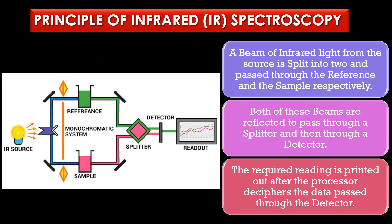The principle of infrared spectroscopy is based on the absorption of infrared radiation by molecules. First, a beam of infrared light from a source is split into two and passed through the reference and the sample respectively. Both beams are then reflected to pass through a splitter and through a detector. Finally, the required reading is printed out after the processor deciphers the data passed through the detector.